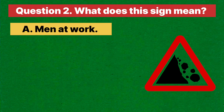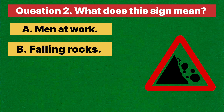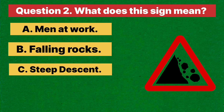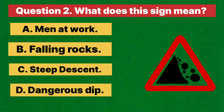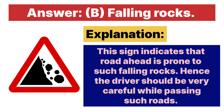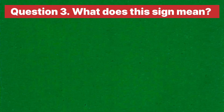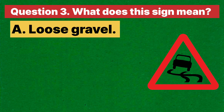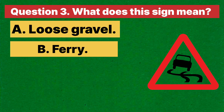Question two: What does this sign mean? A. Man at work. B. Falling rocks. C. Steep descent. D. Dangerous deep. Answer is B, falling rocks. Explanation: this sign indicates that the road ahead is prone to falling rocks, hence drivers should be very careful while passing such a road.